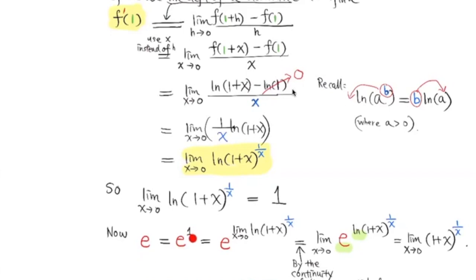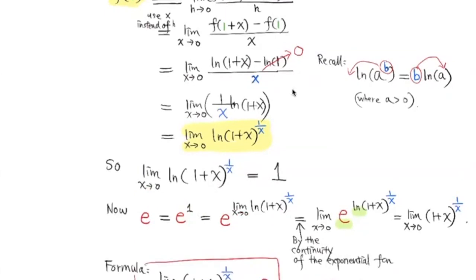So we can write e as e to the first power. And because 1 is equal to this limit, we are going to replace 1 here by this limit. Now because the exponential function with base e is continuous, e to this limit of this function is equal to the limit of e to this function.